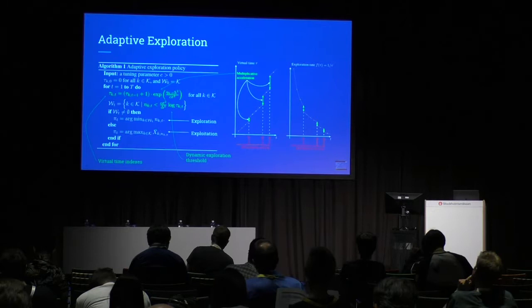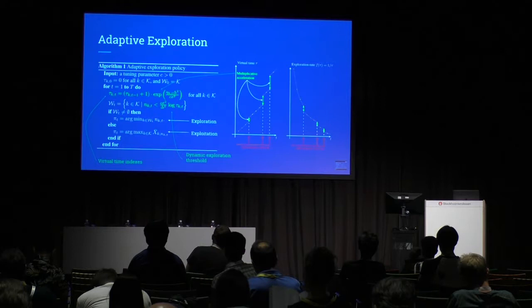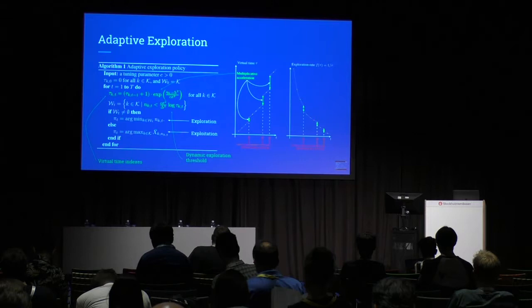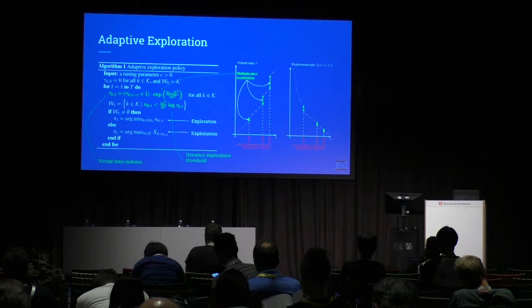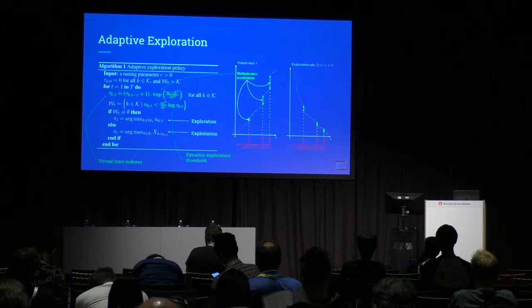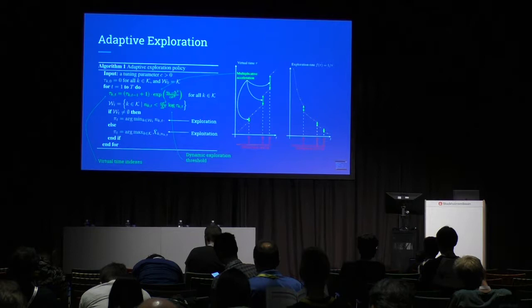We propose an adaptive exploration method in the presence of unknown information flows. It uses virtual time indexes updated dynamically based on information arrivals, replacing the time indexes used by policies to exogenously determine exploration rates. Every time information on a certain arm arrives, the relevant virtual time index is updated using a carefully selected multiplicative factor. Based on these virtual time indexes, the algorithm compares the number of observed samples to a dynamic threshold to decide whether to explore or exploit, reducing exploration rates to balance the loss from both.